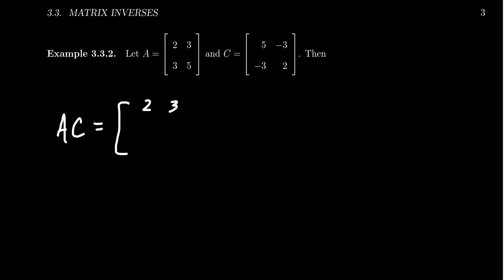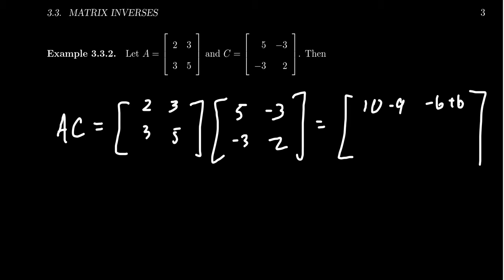Notice this will look like [2, 3; 3, 5] times [5, -3; -3, 2]. If we go about with the matrix multiplication, we're going to take the first row times the first column, we end up with 10 minus 9. Then the first row times the second column, we're going to get -6 plus 6. And then the second row times the first column, we end up with 15 minus 15. And lastly, the second row times the second column, we end up with -9 plus 10. And when you simplify that, you'll notice you end up with 1, 0, 0, 1, which is the 2 by 2 identity.